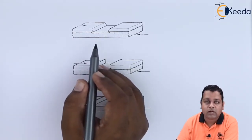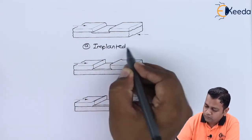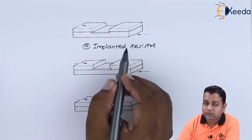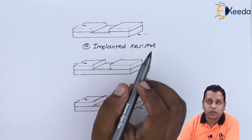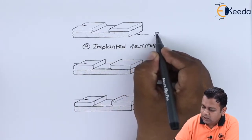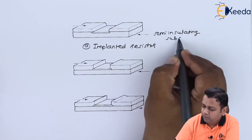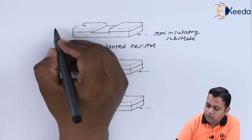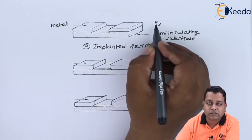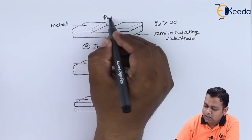The first configuration can be regarded as an implanted resistor. Its behavior will be as like we have seen for the lumped element, but it is a part of the integrated circuitry in the microwave monolithic case. Here we have the bottom place to be the semi-insulating substrate, and here we have the metal above it. The surface resistivity is denoted by rho s, which is greater than the value of 20, and this is the resistor formed here.